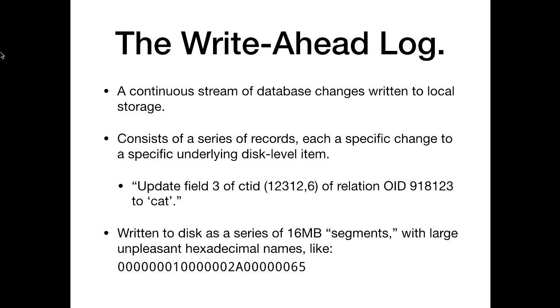In Postgres's case, all of these changes are broken up into a series of 16-megabyte segments, which are given big, unpleasant hexadecimal file names and written to disk. You can change the 16 megabytes by recompiling Postgres, but no one ever does this — and probably don't — because there are tools that have the 16 megabytes hardwired into themselves.